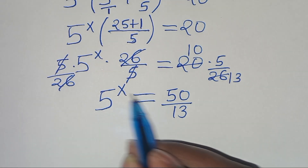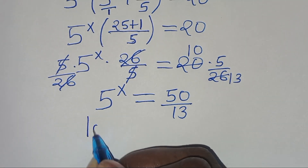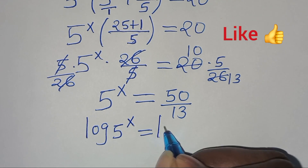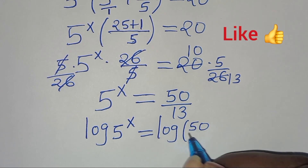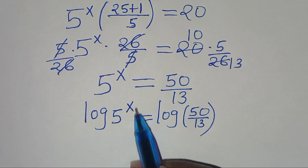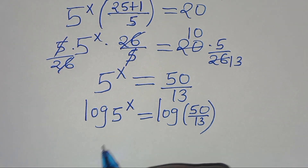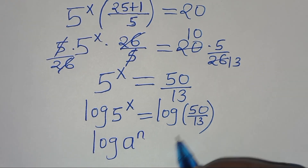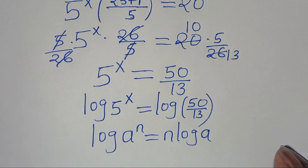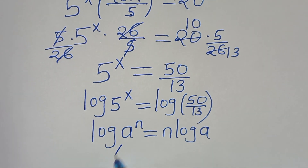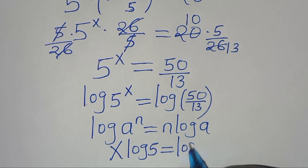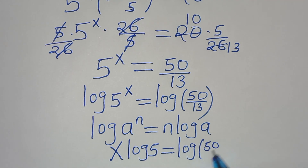To solve for x, we introduce logarithms on both sides, so we have log of 5 to the power of x equals log of 50 over 13. Now log of 5 to the power of x is in the form log(a^n), which we can express as n times log(a). Applying this power rule of logarithms, log(5^x) becomes x times log 5, which equals log(50/13).